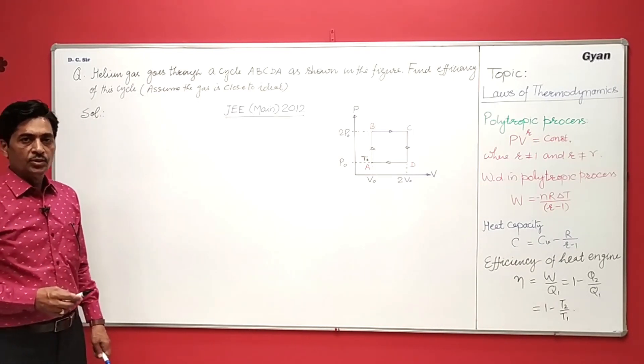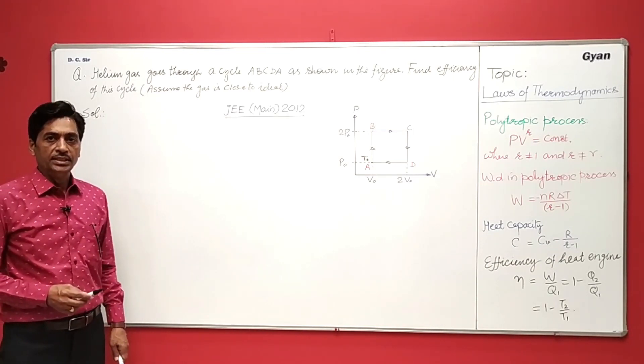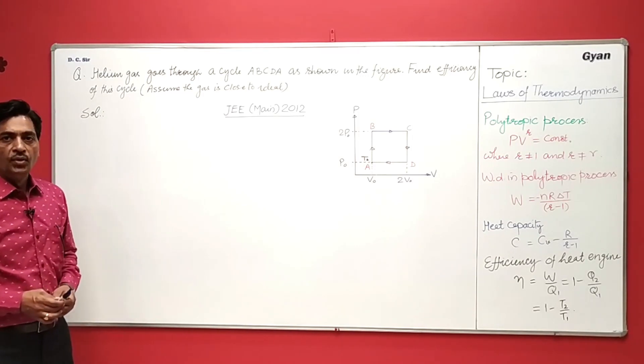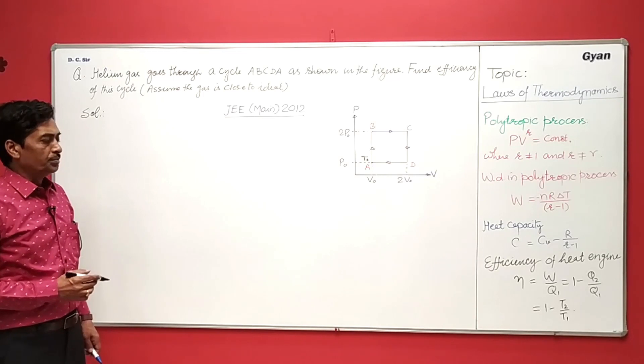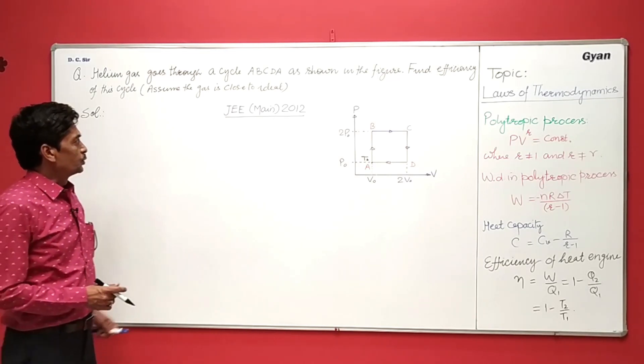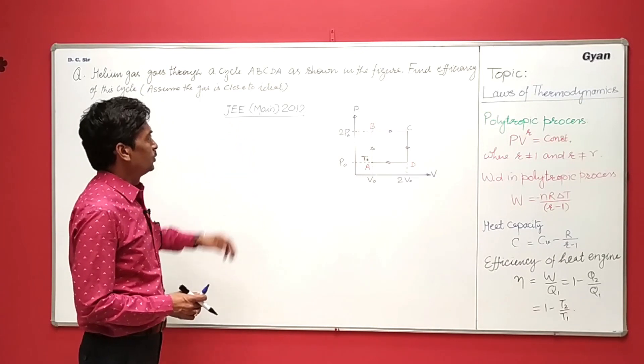The problem is helium gas goes through a process A, B, C, D, A as shown in the figure. Find the efficiency in the process. Assume the gas to be ideal. This is a problem I am going to ask for in 2012.